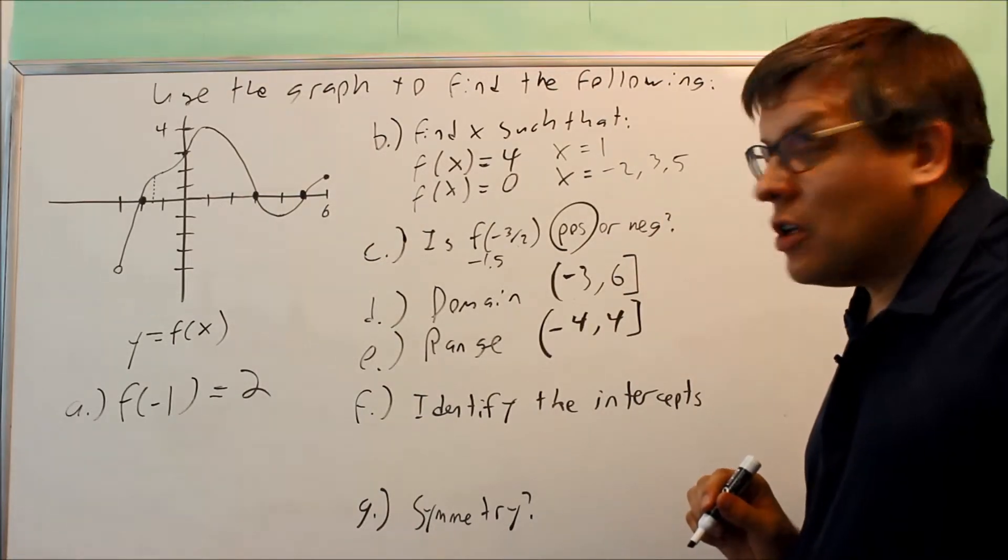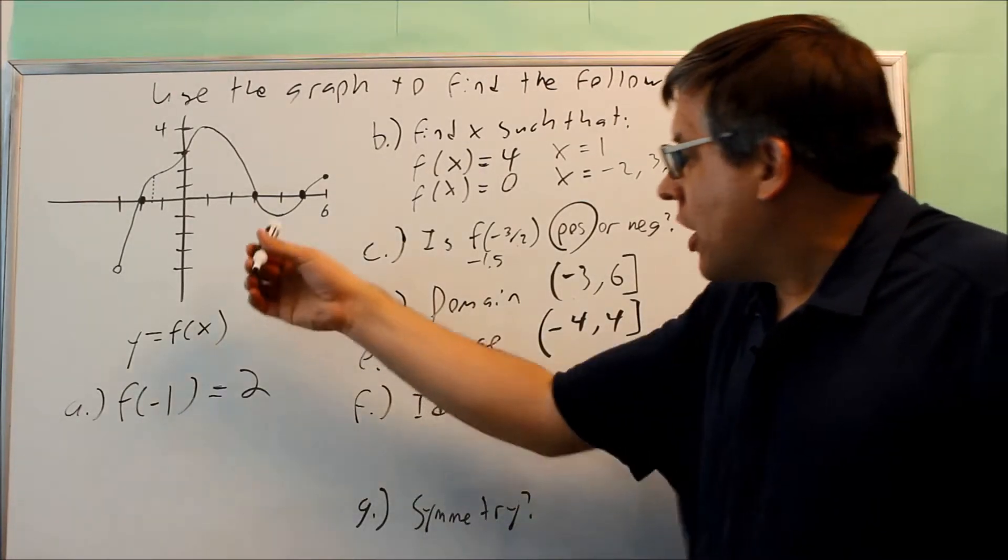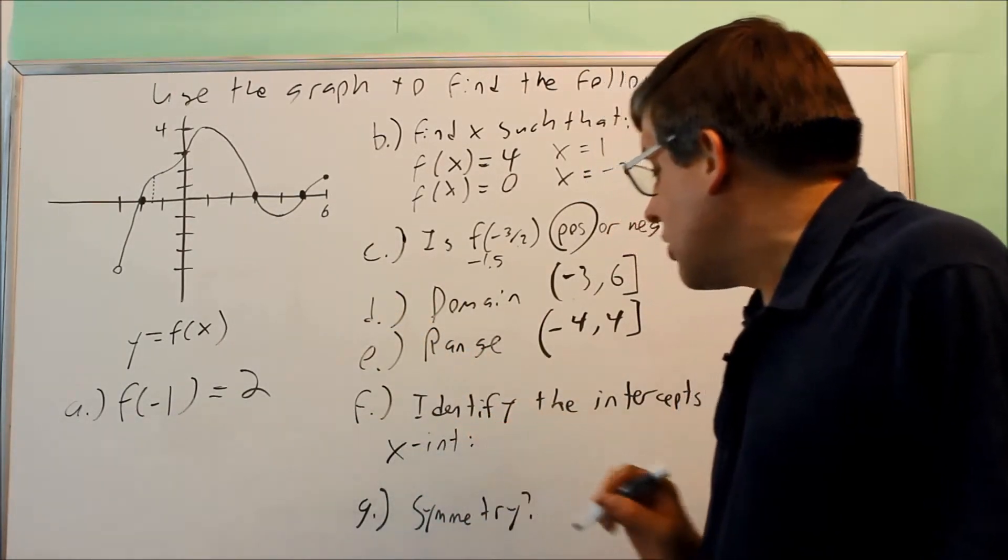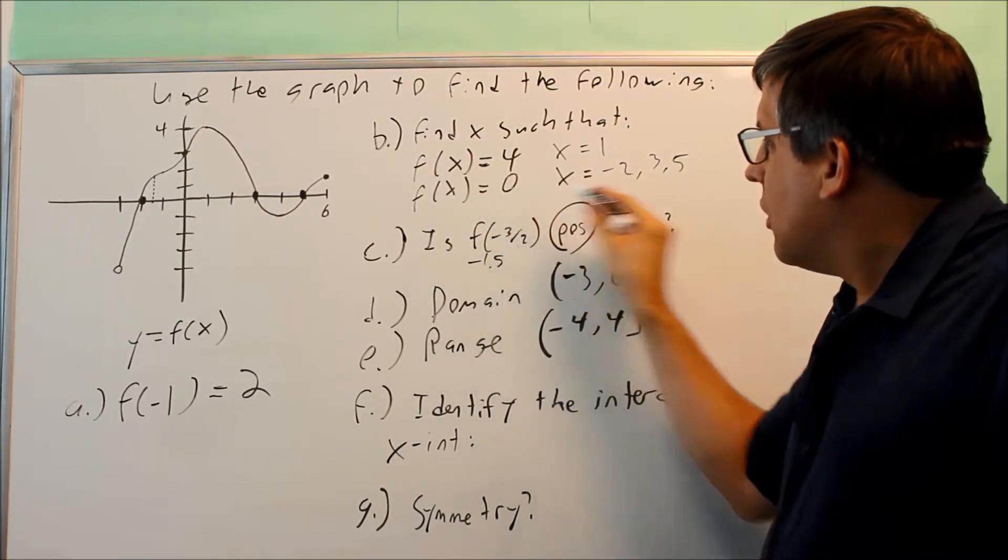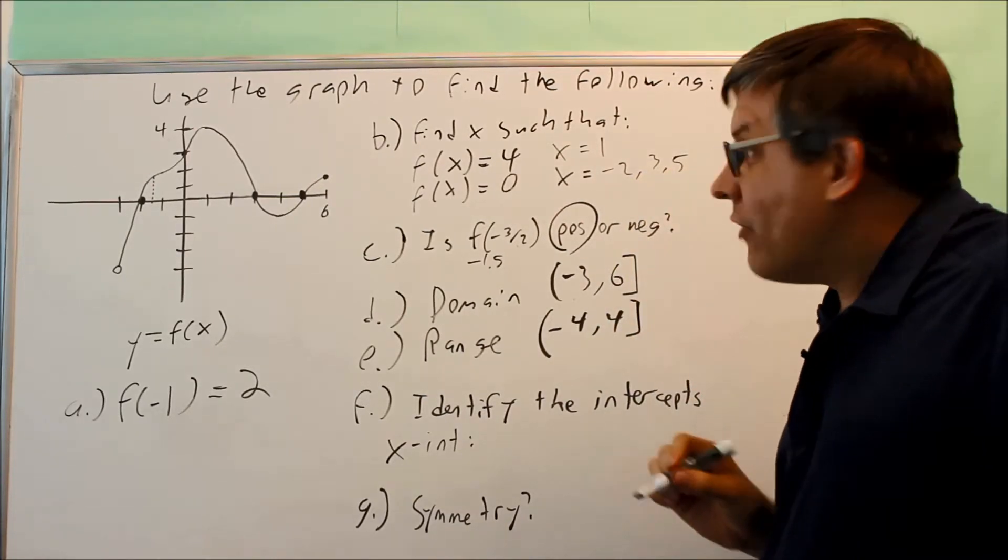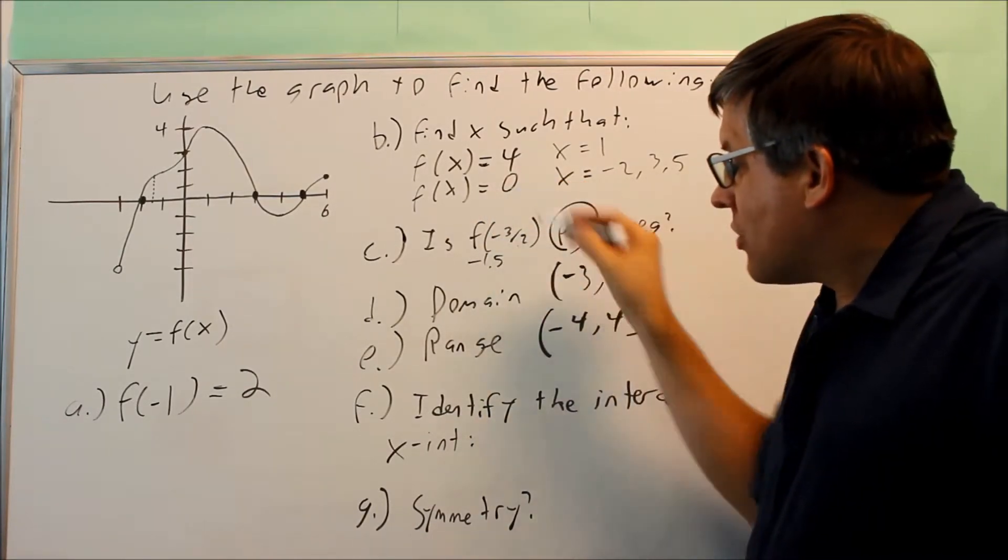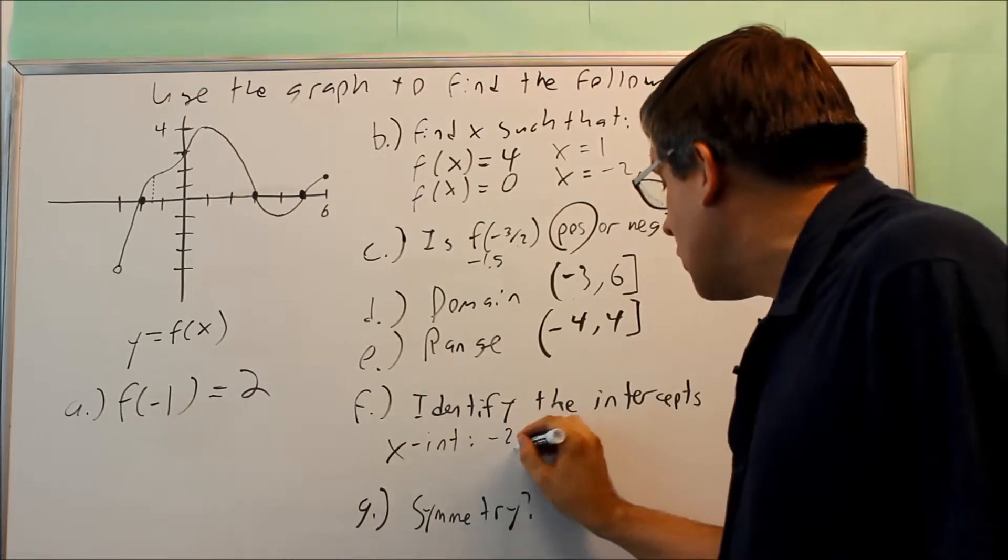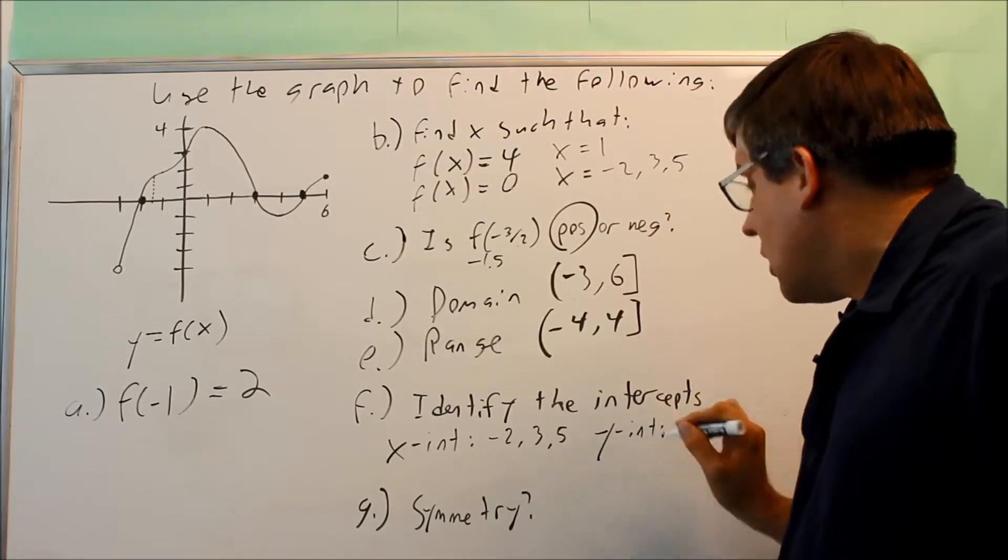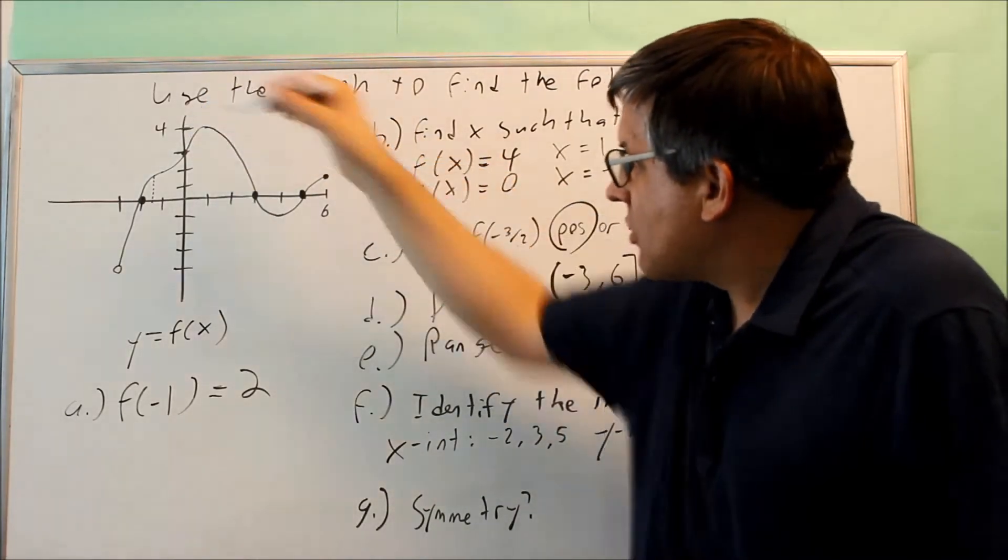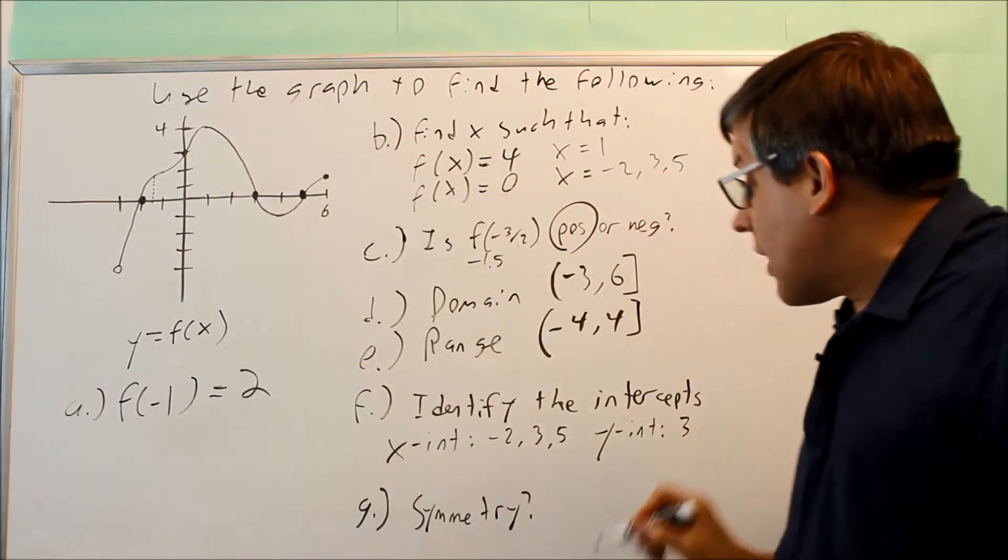Next one, identify the intercepts. The intercepts is where it crosses either the x-axis or the y-axis. So first we have x-intercepts. Now x-intercepts, we actually did that already. We did it up here in part B. When it asks for f of x equals 0, it's going to be the same answers: negative 2, 3, and 5. It's actually just asking the same thing two different ways. If the y value is 0, that is the definition for x-intercepts. So it's going to be negative 2, 3, and 5. Those are your x-intercepts. The y-intercept is going to be where it crosses the y-axis. It's going to cross there at 3. There's only one place where it crosses the vertical y-axis. It's going to be that one.